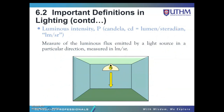Next is luminous intensity, P. The SI unit is candela (cd), equivalent to lumen per steradian. Luminous intensity is the measure of the luminous flux emitted by a light source in a particular direction, measured in lumens per steradian. A steradian can be defined as the solid angle subtended at the center of a unit sphere by a unit area on its surface.